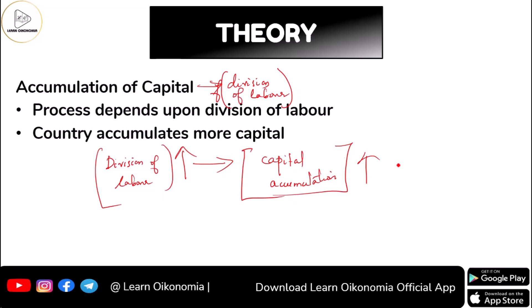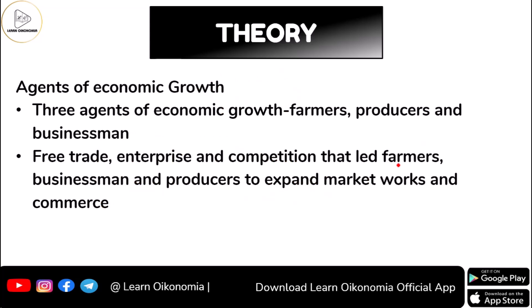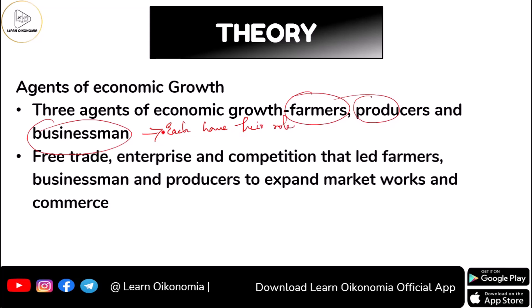Another important aspect Smith gave emphasis to was the agents of economic growth. Smith identified three economic agents: he recognized the role of farmers, producers, and businessmen, and believed that each has their own role. He believed that free trade, enterprise, and competition led farmers, businessmen, and producers to expand the market, and this is something that helps in development.